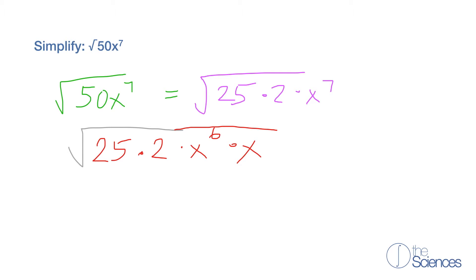Now the square root of 25 is 5. The square root of x to the 6 is x cubed because x cubed squared equals x to the 6.